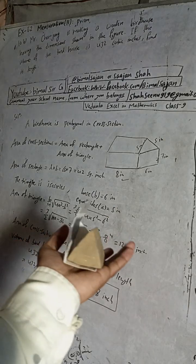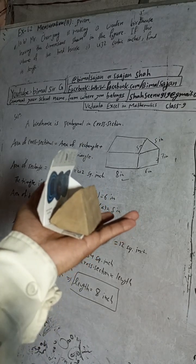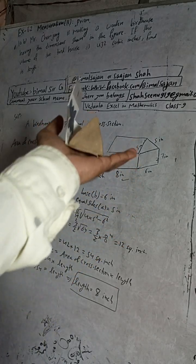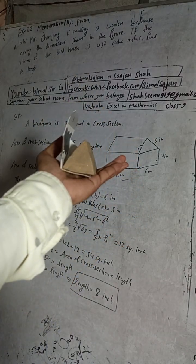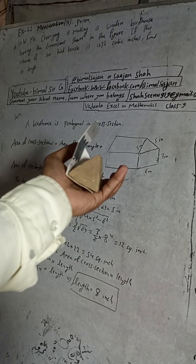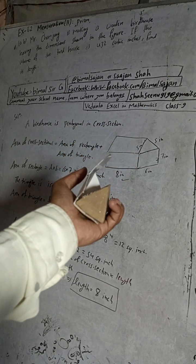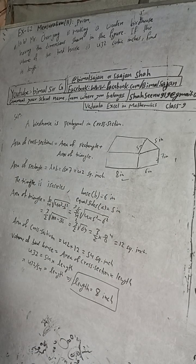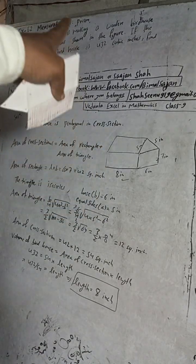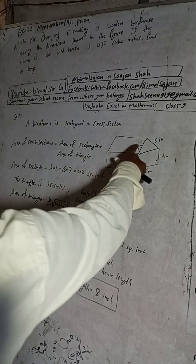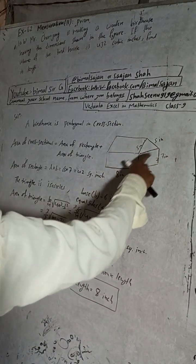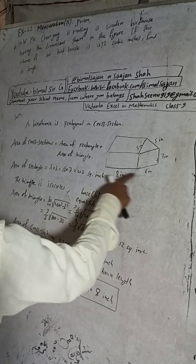We need to identify a triangular prism and then a pentagonal prism. The pentagonal prism has 5 sides — dimensions include 5, 6, and 7 — and the length is 5 inches.